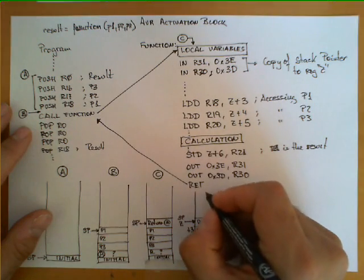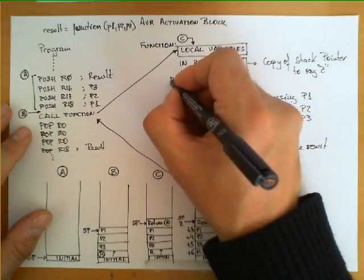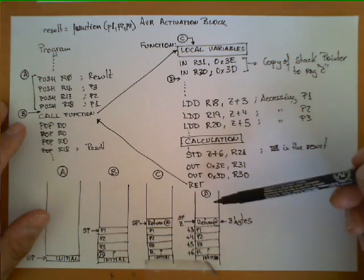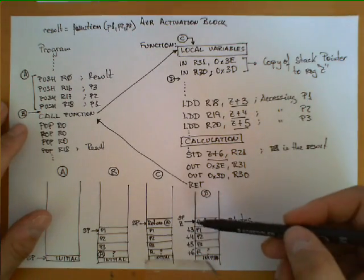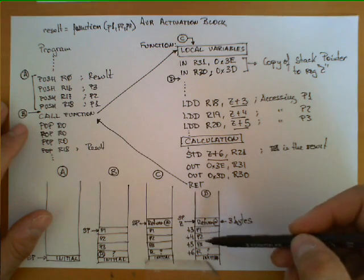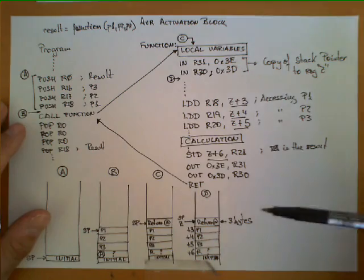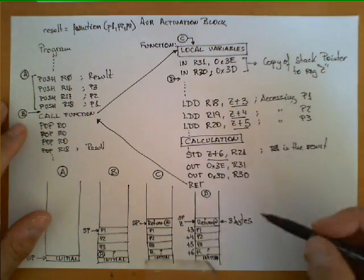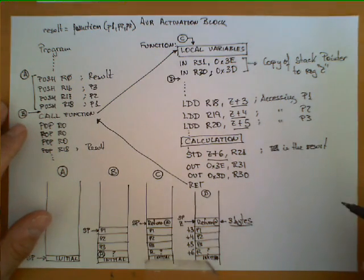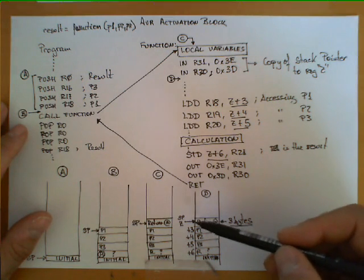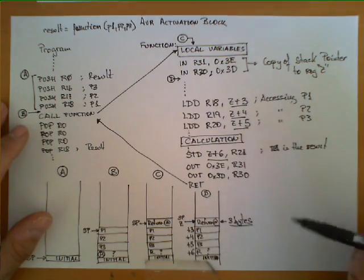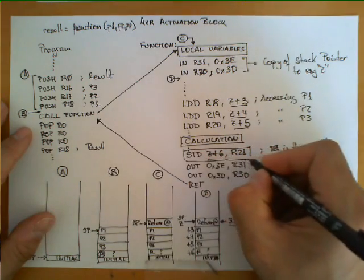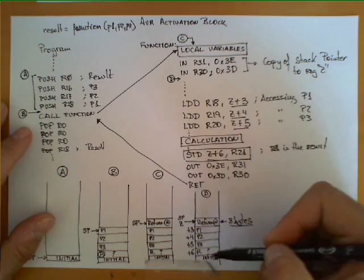This is the stack at point D in the code. We can now see where these displacements come from: 3, 4, and 5 are the bytes we jump from address Z to access P1, P2, and P3 respectively. Since the return address in AVR is three bytes, adding three gives the first parameter's address, four gives the second, five gives the third, and Z+6 is the address of the result. This is why the STD Z+6 instruction stores the result in the proper location of the activation block.